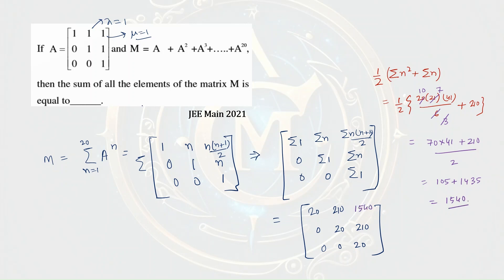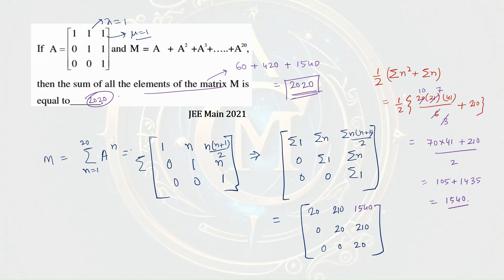The sum of all elements of matrix M will be 60 plus 420 plus 1540, which equals 2020. So 2020 is the correct answer. You can see how easily we solve such problems within a few minutes if we know directly the pattern of this matrix multiplication.